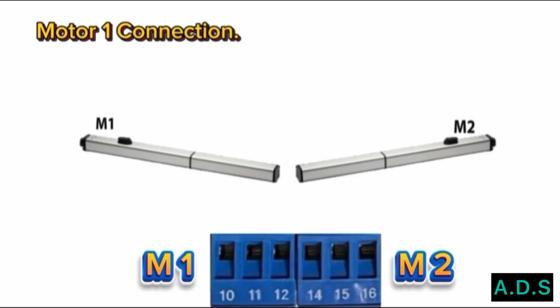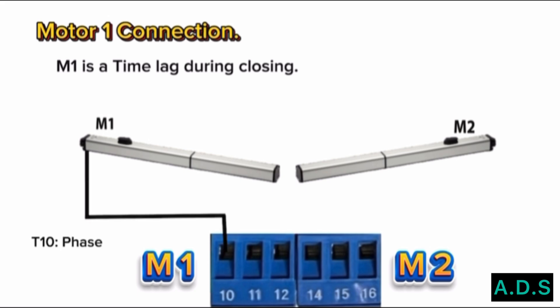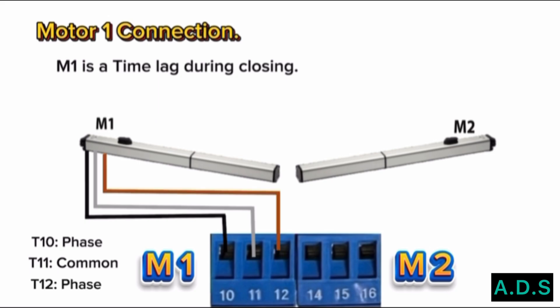Motor 1 connection. Motor 1 has a time lag during closing, meaning motor 1 will connect to the control board at terminals 10, 11, and 12, because motor 1 will open first and close second. Terminal 10 is the phase pin for motor 1 to run. Terminal 11 is the common pin for motor 1 — the motor common wire connects to terminal 11. Terminal 12 is the phase pin for motor 1 to run. Terminal 10 and terminal 12 will connect with a capacitor. Some operators have the capacitor inside the machine, some have it inside the control board.